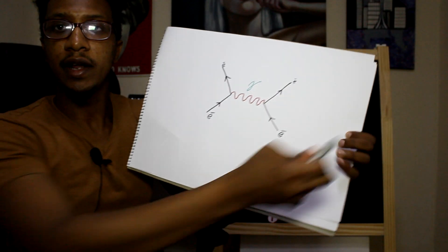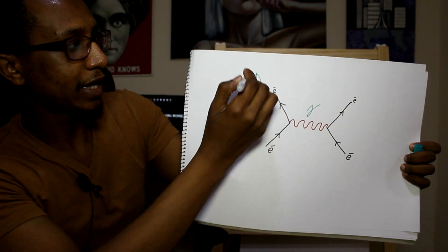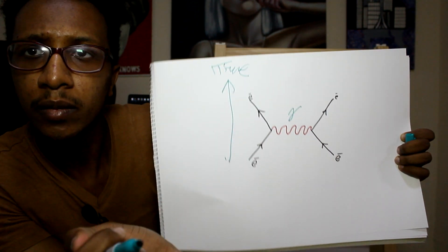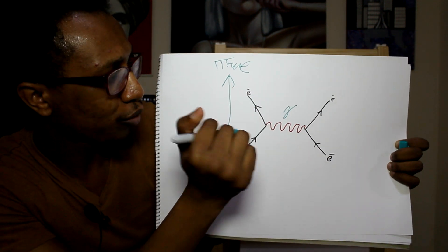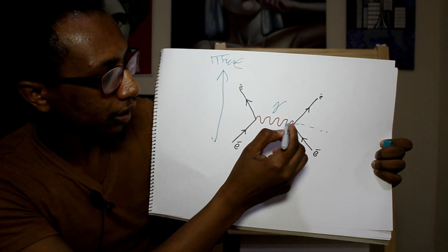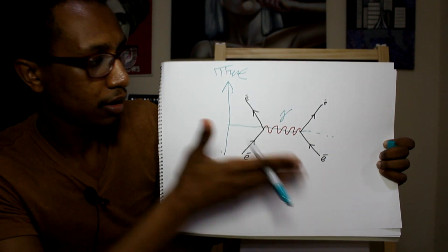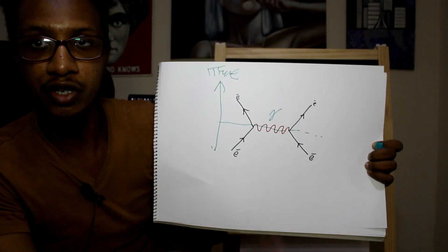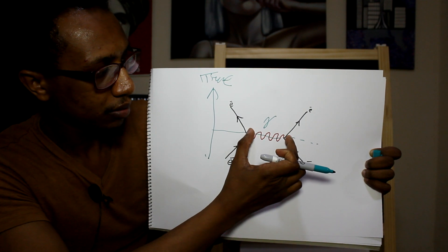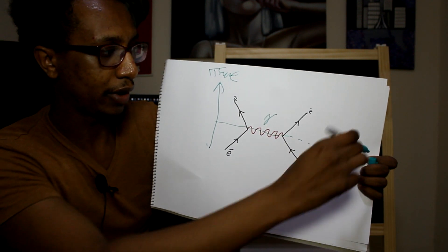Also, in a Feynman diagram, time goes like this — this direction is time. So if I put a line here, this is before and here is after the interaction. You can see they come in, the photon tells them to move away, and then they move away from each other.